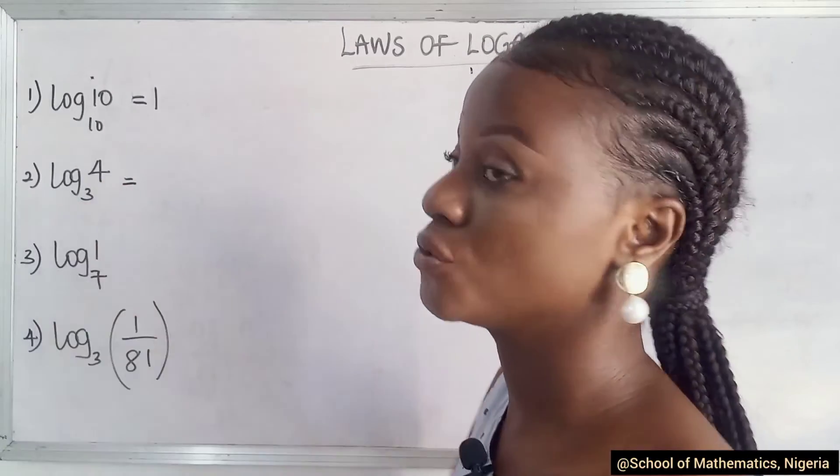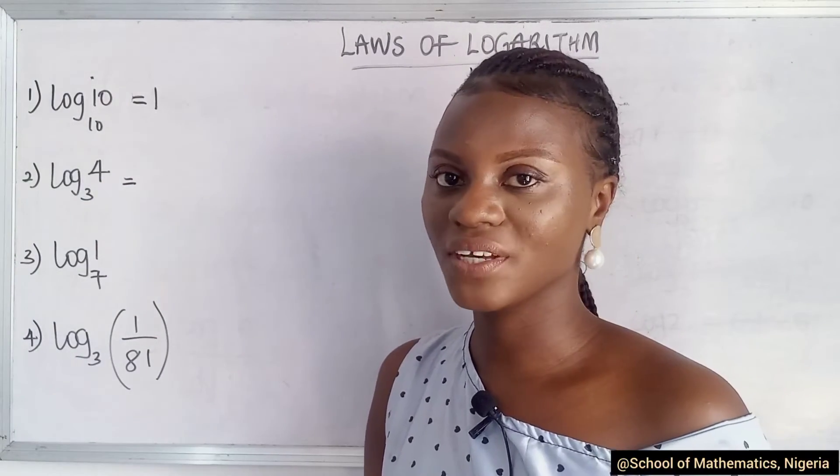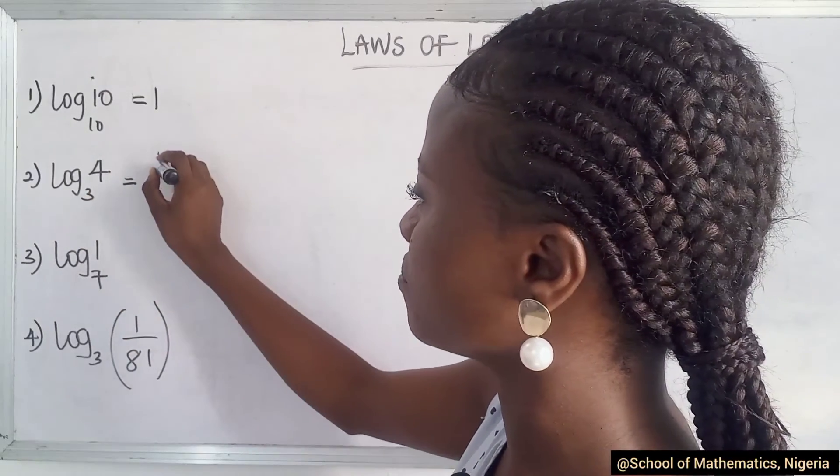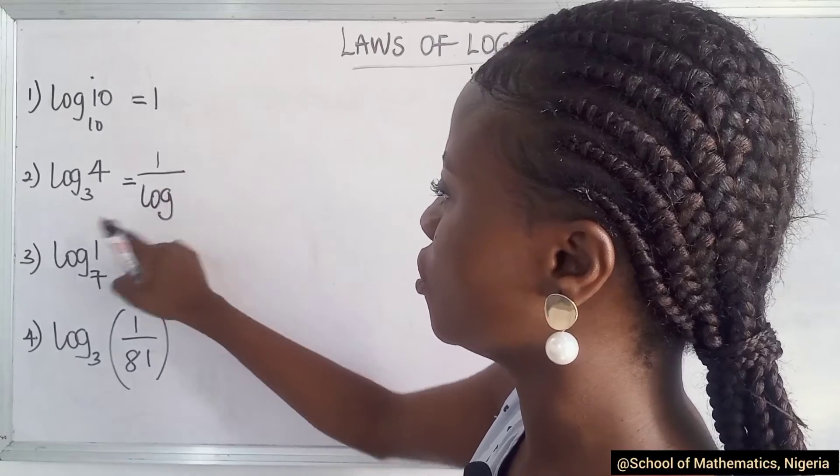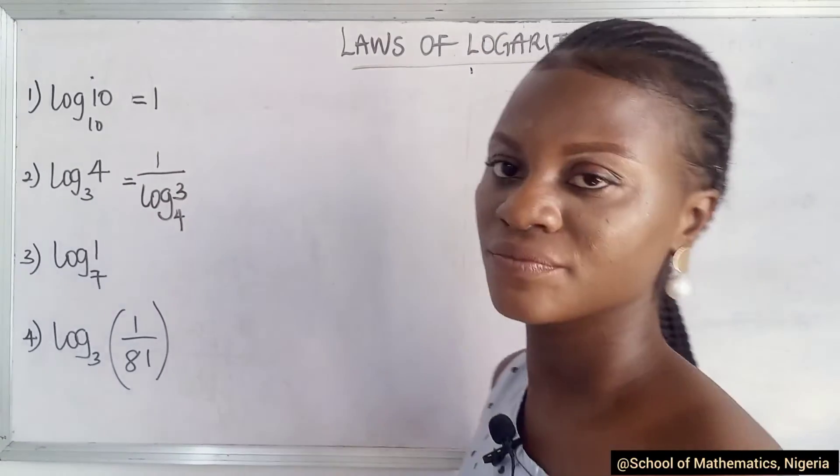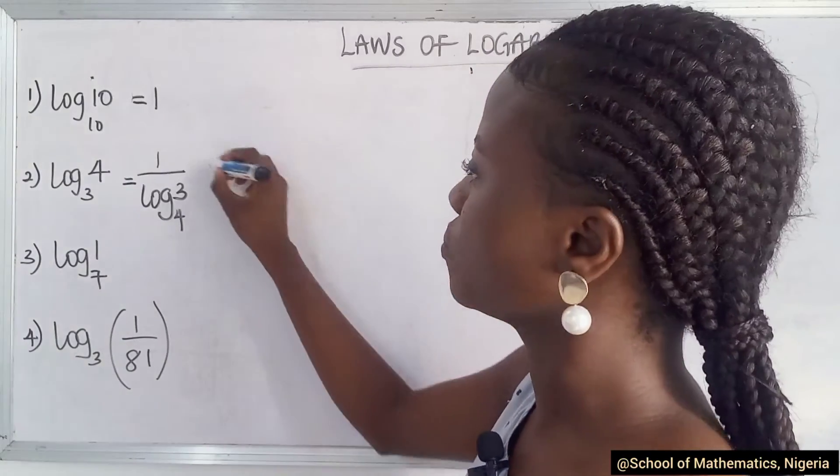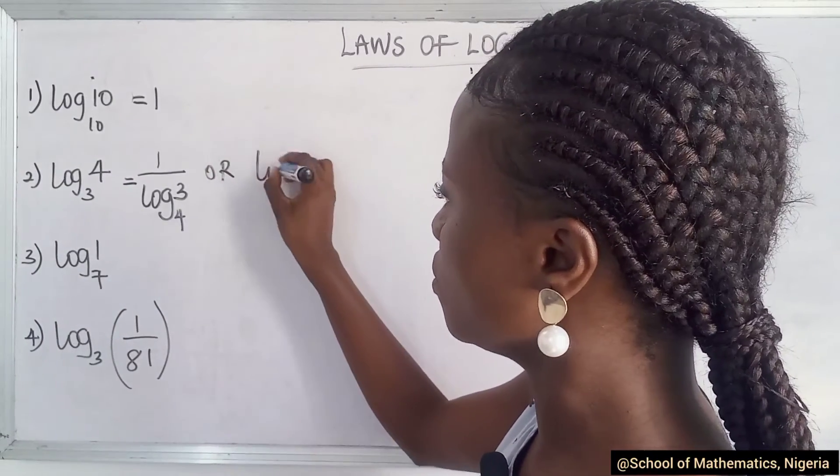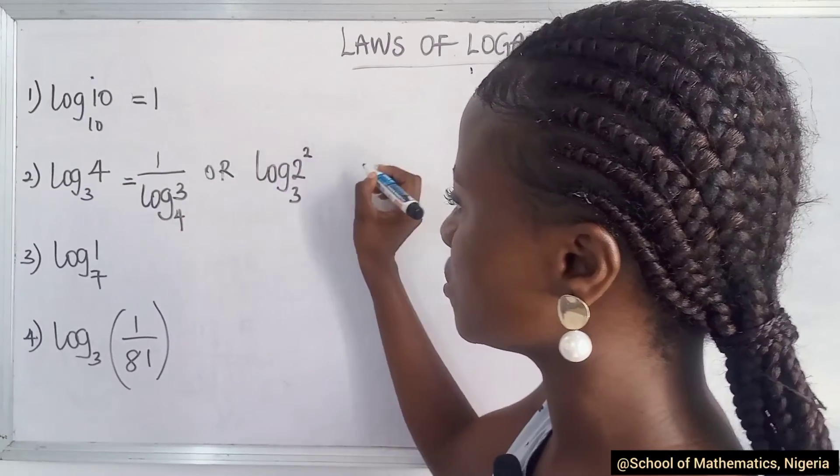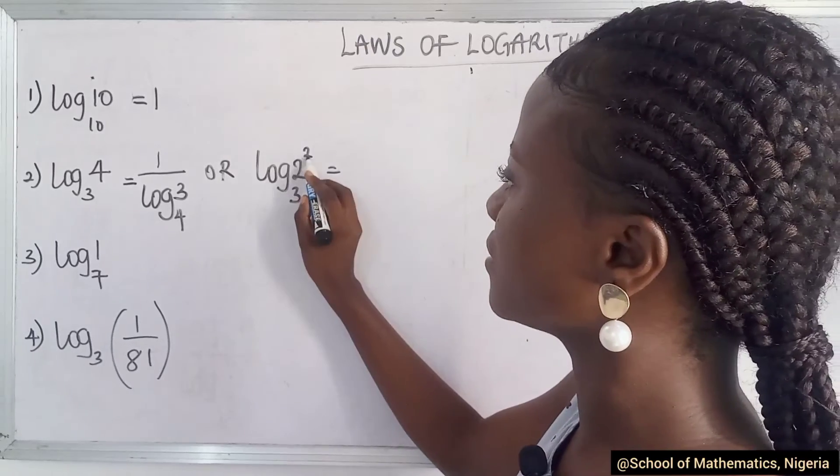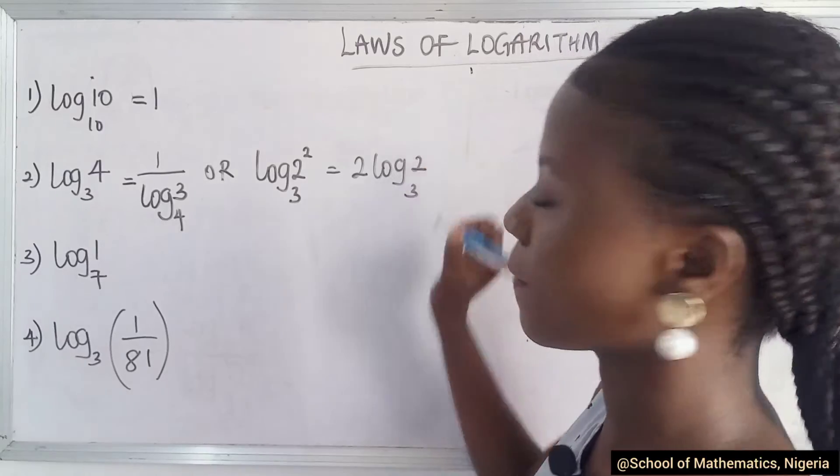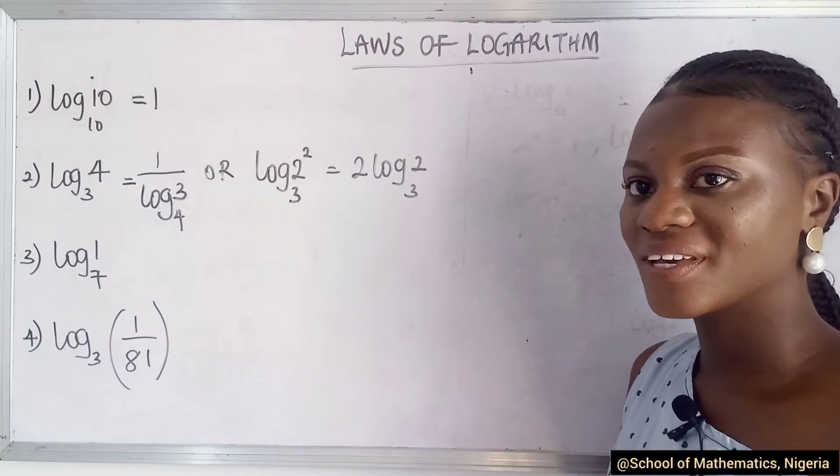Then for this one, you can do it two ways. Whichever way is okay, is correct. We remember one rule that says you can make this become the inverse, and then you change. This becomes four, and this becomes three. But somebody who is trying to really simplify will tell you log to base three. Remember that four can be written in index like this. And then there's a rule that says take this to the back, and then you have this. Is that okay?